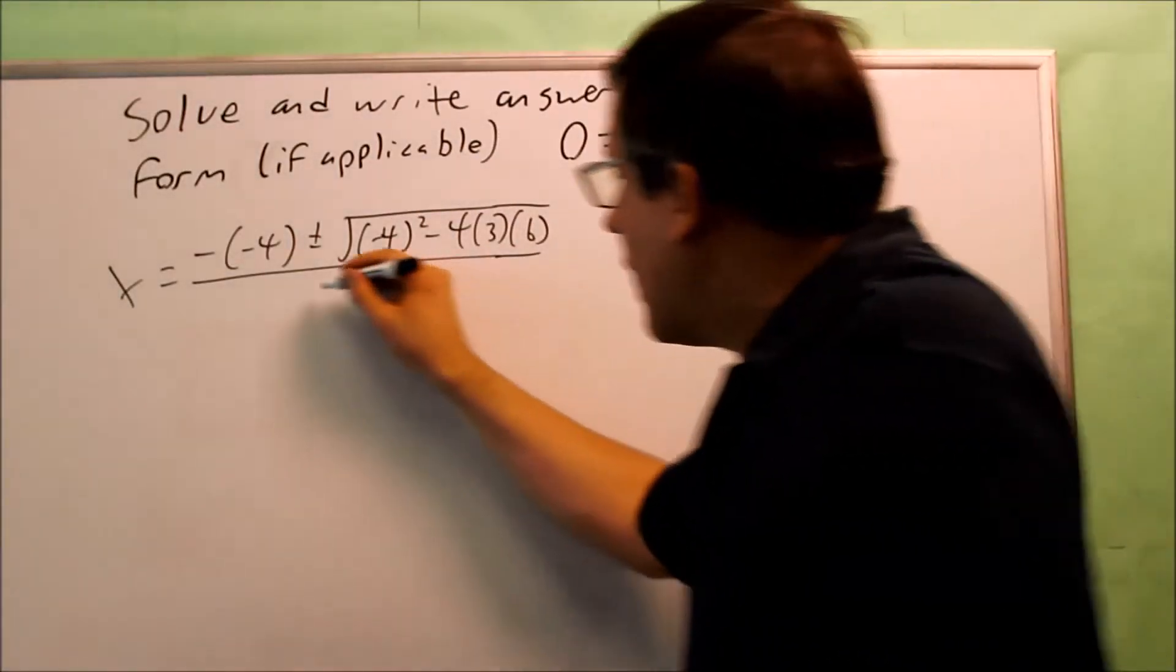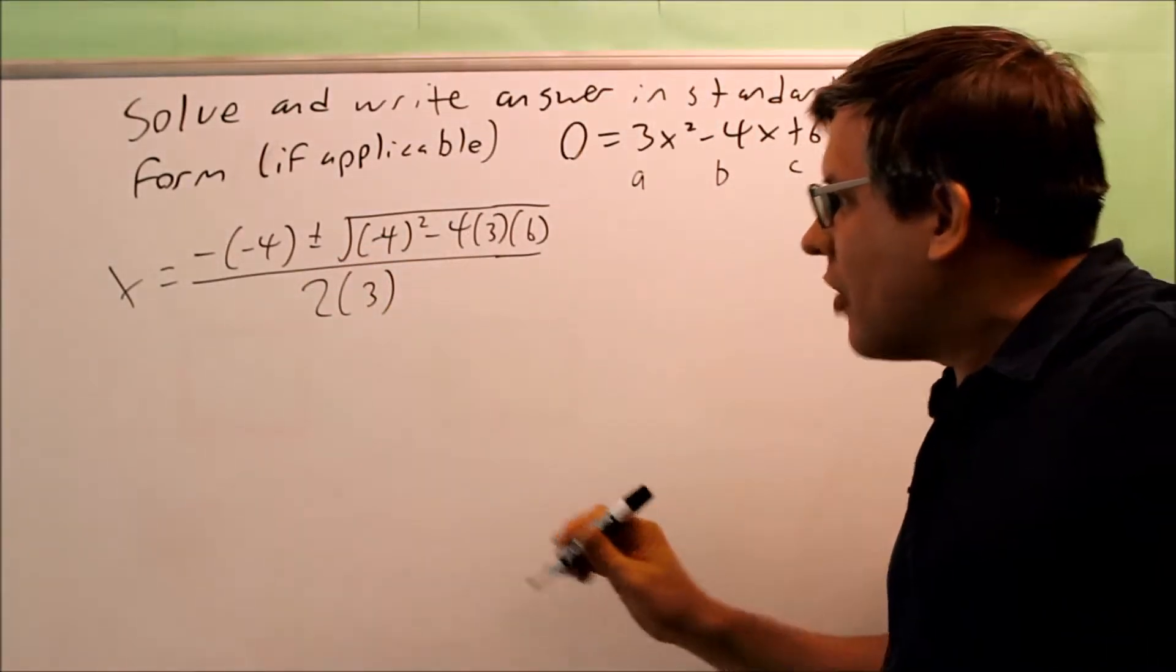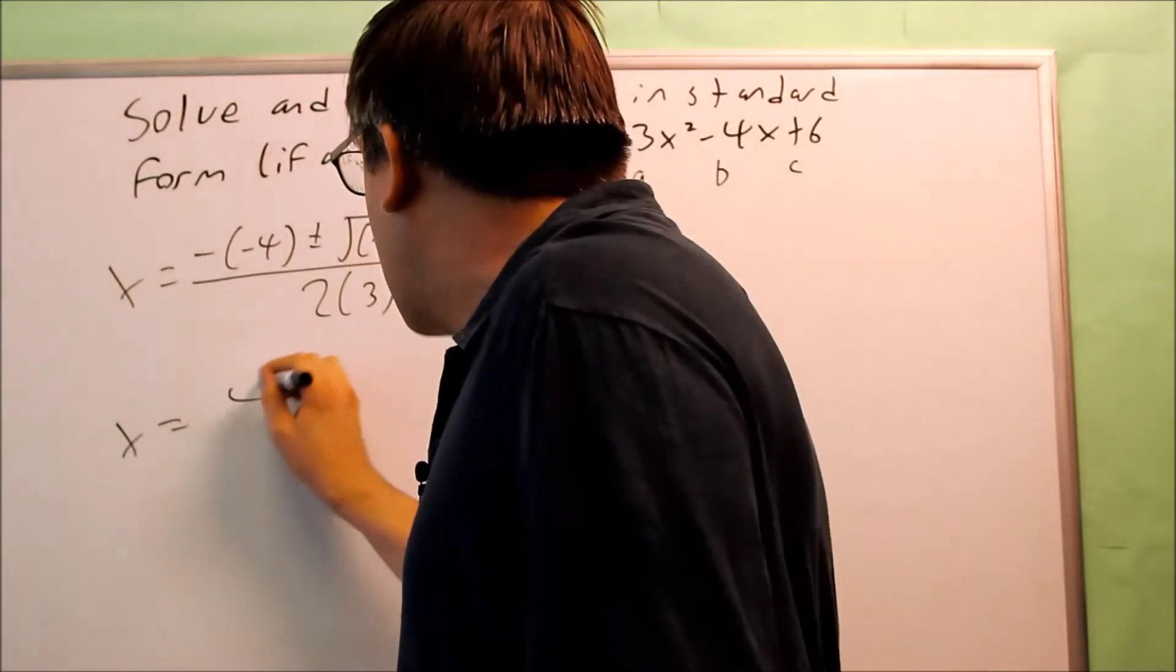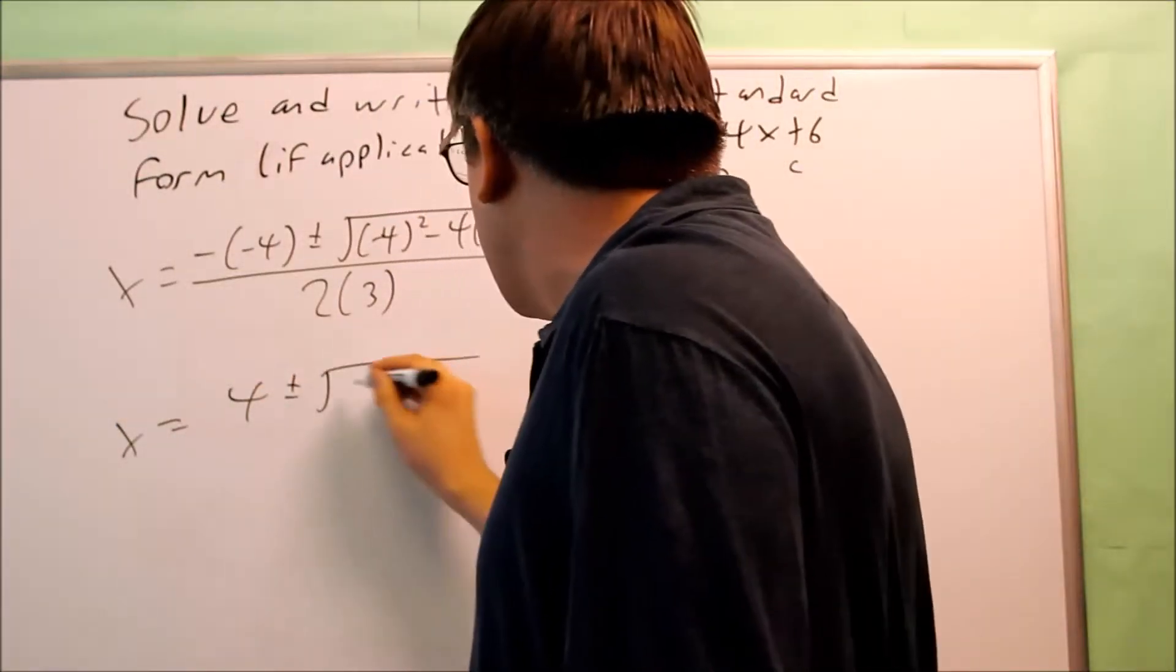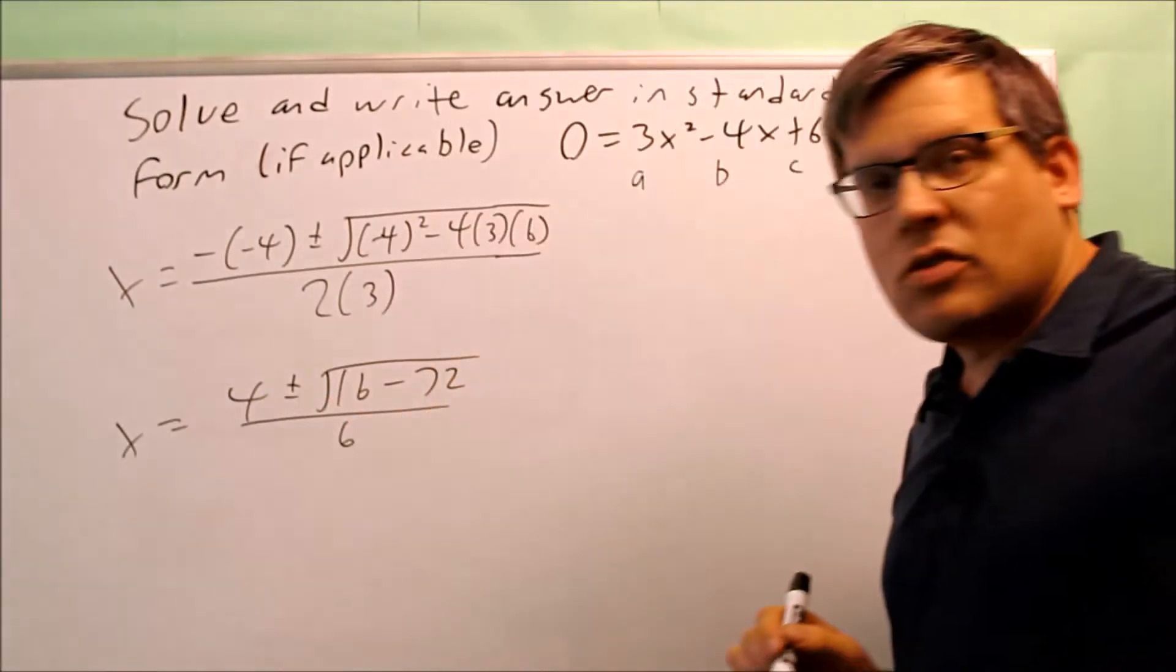On the bottom, I have 2 times a, or 2 times 3. I want to simplify this. I get positive 4 plus or minus the square root of 16 minus 72. On the bottom, I get 6.